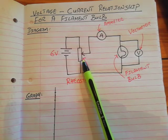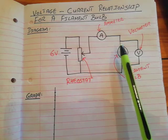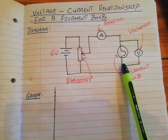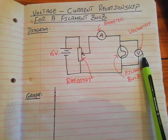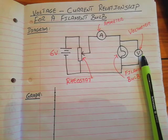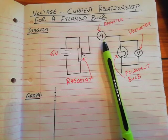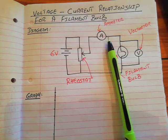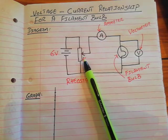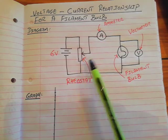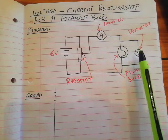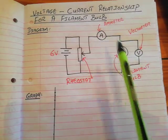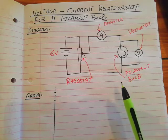So the procedure for the experiment is very simple. Measure the voltage between the ends of the filament bulb with the voltmeter, measure the corresponding current through the filament bulb with the ammeter, increase the voltage in stages, and again measure several corresponding values of voltage and current. With them you plot a graph.